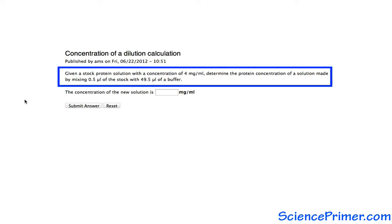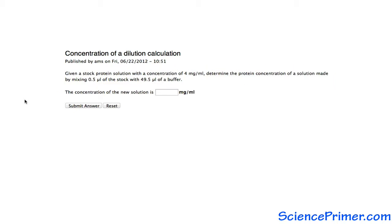given a protein solution with a concentration of 4 milligrams per mil, determine the protein concentration of a solution made by mixing half a microliter of this solution with 49.5 microliters of a buffer.